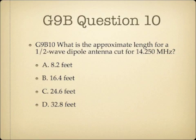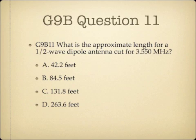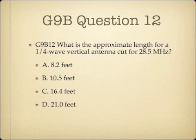Question 10: What is the approximate length for a half wave dipole antenna cut for 14.250 MHz? A. 8.2 feet. B. 16.4 feet. C. 24.8 feet. Or D. 32.8 feet. Question 11: What is the approximate length for a half wave dipole antenna cut for 3.550 MHz? A. 42.2 feet. B. 84.5 feet. C. 131.8 feet. Or D. 263.6 feet. Question 12: What is the approximate length for a quarter wave vertical antenna cut for 28.5 MHz? A. 8.2 feet. B. 10.5 feet. C. 16.4 feet. Or D. 21 feet.